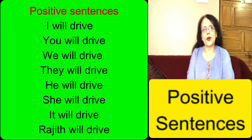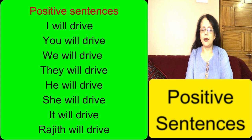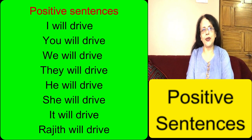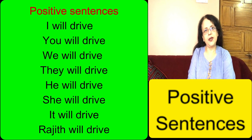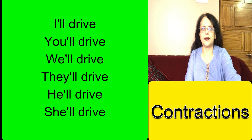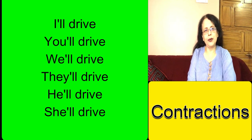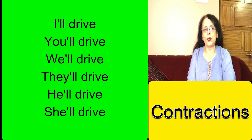Now let's see how to form positive sentences in simple future. The structure is subject plus will plus base form of the verb. Repeat after me: I will drive, you will drive, we will drive, they will drive, he will drive, she will drive, it will drive. We can also use short forms or contractions: I'll drive, you'll drive, we'll drive, they'll drive, he'll drive, she'll drive. The short form of I will becomes I'll — we remove the w and i and add an apostrophe.